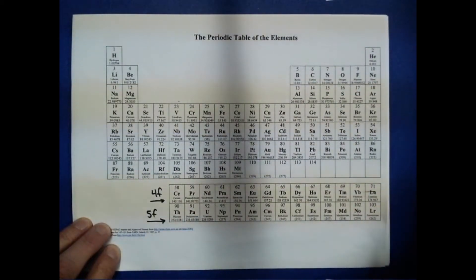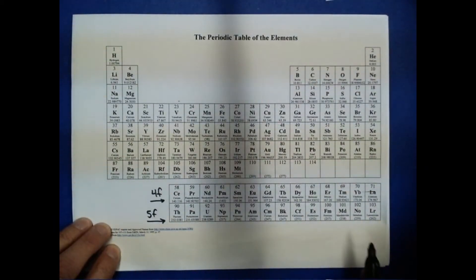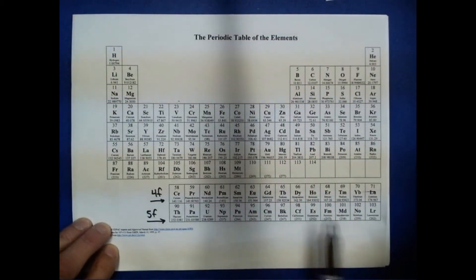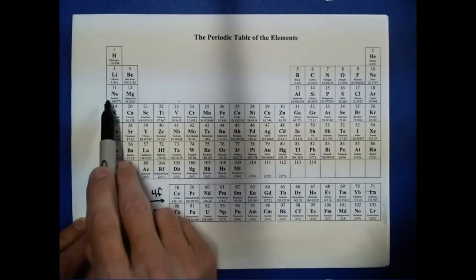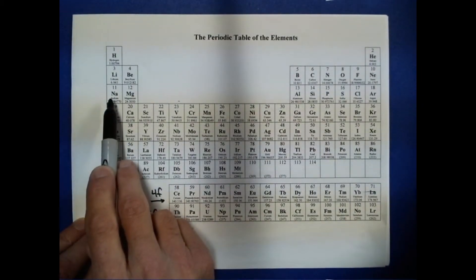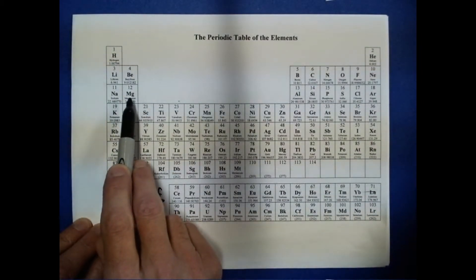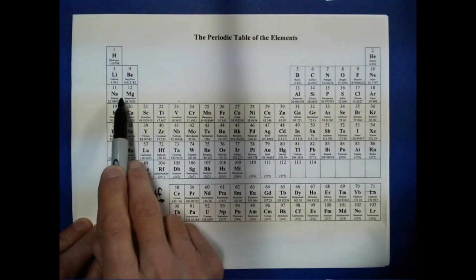We're going to discuss the sizes of cations and anions. First, let's compare the atomic radii of sodium and magnesium with the sizes of their ions.